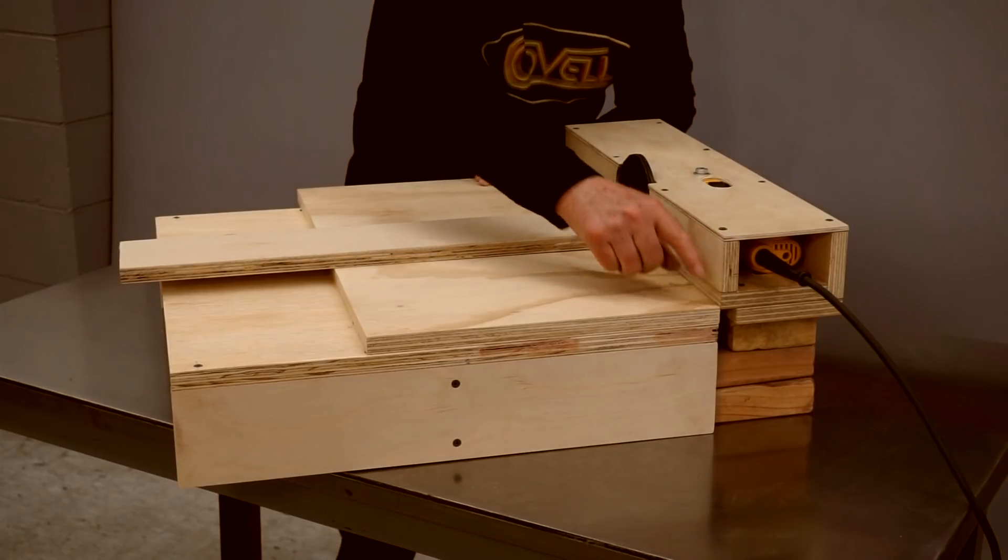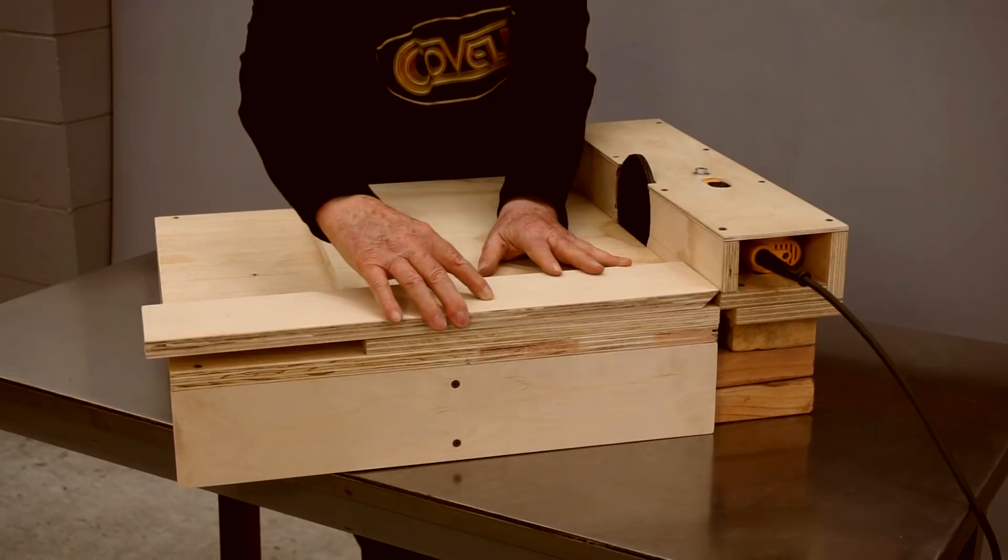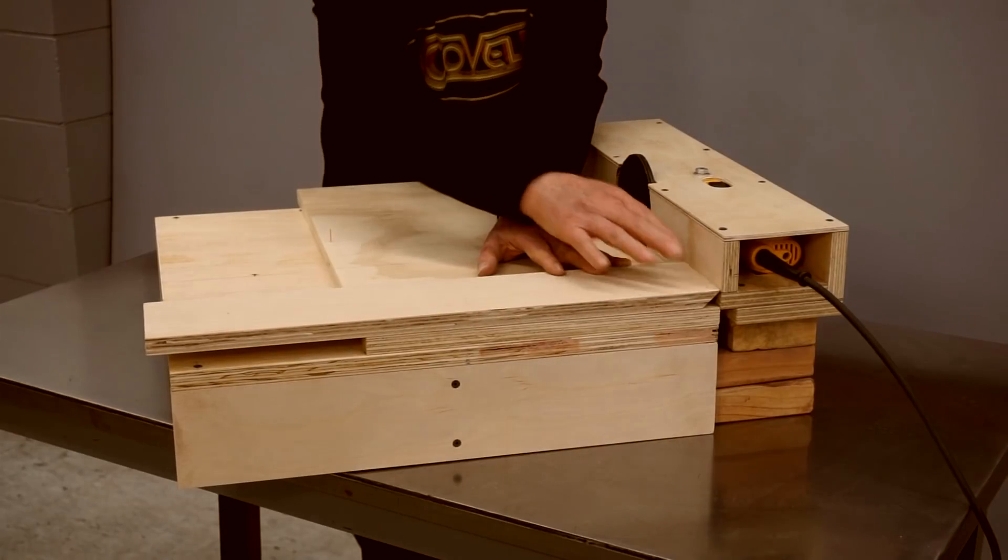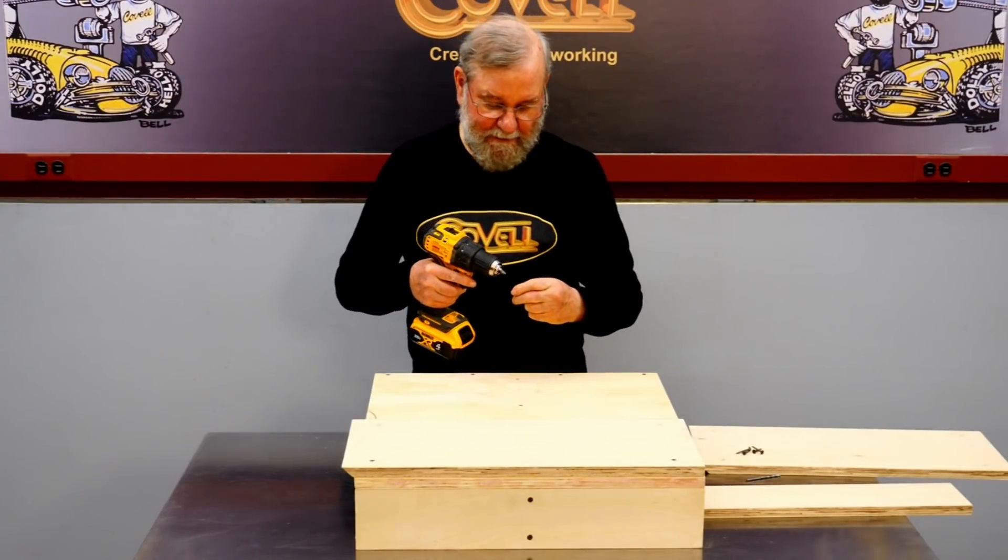And one more thing I'm going to do is to cut a 45 degree angle on the leading edge of this top surface of the table. That will allow me to position the hinges where they work best. Now I can assemble the top layer of the table top.